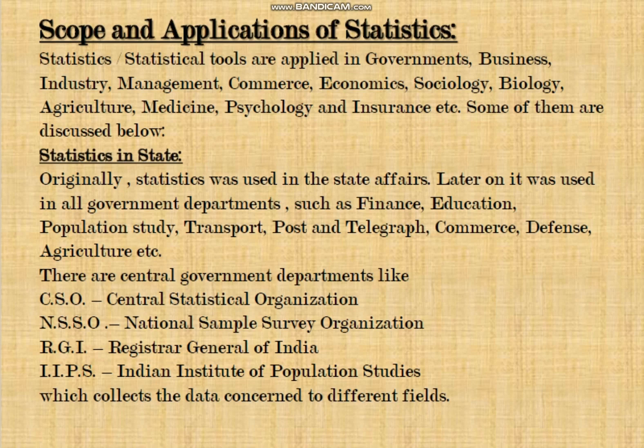There are central government departments like the CSO (Central Statistical Organization), NSSO (National Sample Survey Organization), RGI (Registrar General of India), and IIPS (Indian Institute of Population Studies). These government bodies collect, analyze, interpret, and publish results on a regular basis, helping collect voluminous data, draw conclusions, and formulate policies.